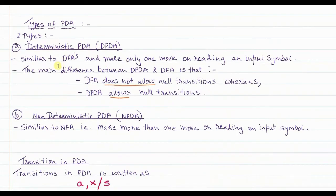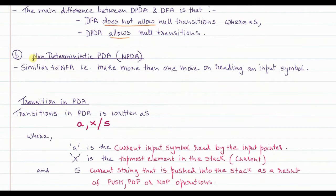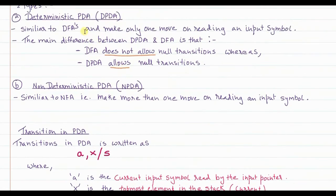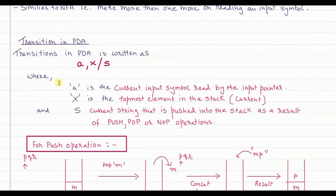There are basically two types of PDAs. The first is Deterministic PDA or DPDA, similar to DFA — it makes only one move on reading an input symbol. The second is Non-deterministic PDA or NPDA, similar to NFA — it makes more than one move on reading an input symbol. We will deal with DPDA first, then NPDA.